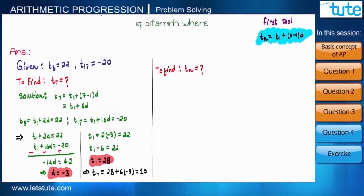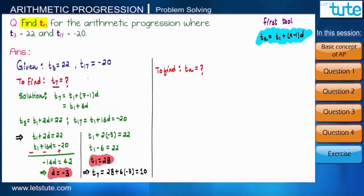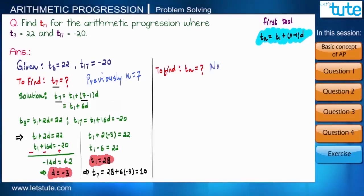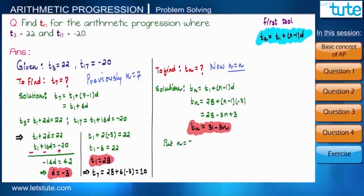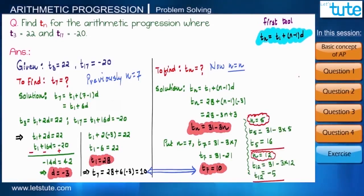Now suppose we are asked to find tn instead of t7. The values of t1 and d remain the same, and we write n as it is. Substituting all values into the formula gives us the general expression tn equals 31 minus 3n. To cross-check, putting n equals 7 gives t7 equals 10, which is correct. You can put different values of n to obtain different terms of the sequence.